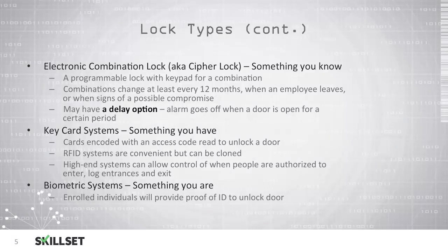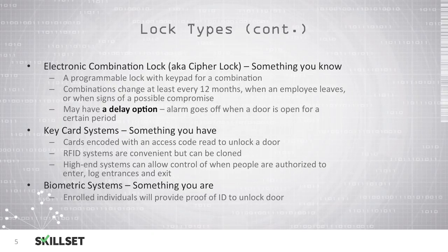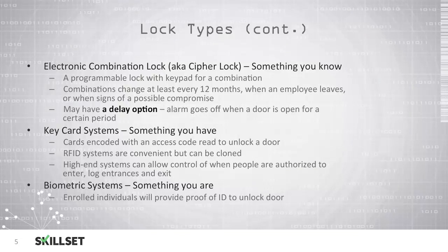We also have other options for types of locks that we can use in our organization. An electronic combination lock, or cipher lock, uses a something-you-know authentication mechanism. Here we can change the combination on the lock and program it to something that is easy for us to remember. We should change the combination at least once every 12 months, every time an employee leaves the organization, and also if we have any sign of a possible compromise. Some of these locks also have a delay option where an alarm will sound if the door is held open for a certain period of time.